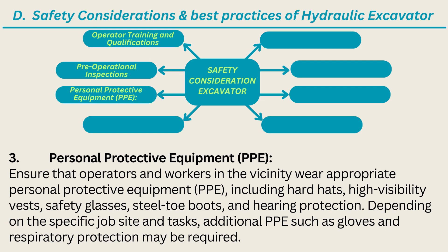3. Personal protective equipment (PPE): Ensure that operators and workers in the vicinity wear appropriate PPE, including hard hats, high-visibility vests, safety glasses, steel-toe boots, and hearing protection. Depending on the specific job site and tasks, additional PPE such as gloves and respiratory protection may be required.